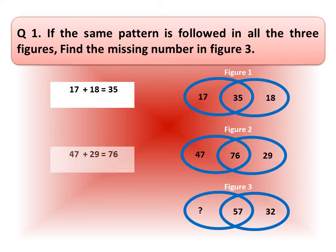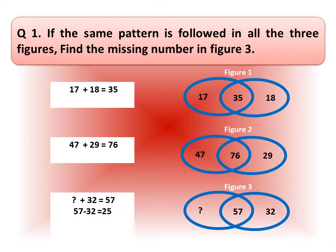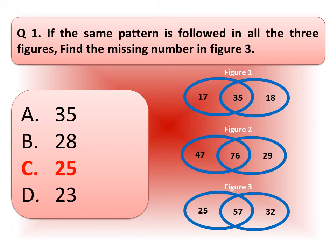In the same way, in figure 2, the middle number 76 is the addition of number 47 and number 29. So, now we can find the missing number. Look at the solution. Here, you need to subtract number 32 from the number 57 and you will find the answer. And the correct answer is number 25. 25 plus 32 is equal to 57.